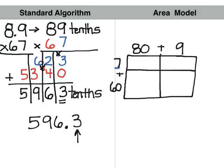So I am going to take my 7 and times it by 80 which gives me 560. I am going to take my 7 again and multiply it by the 9 which equals 63.